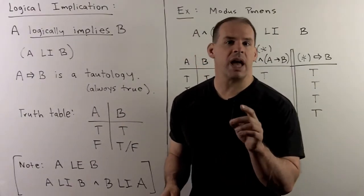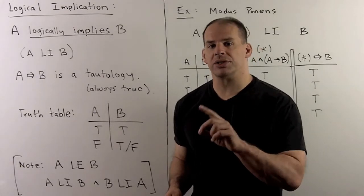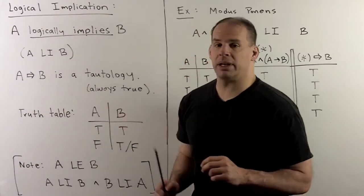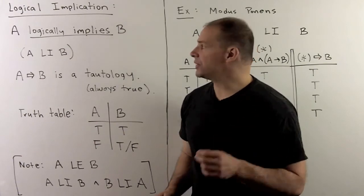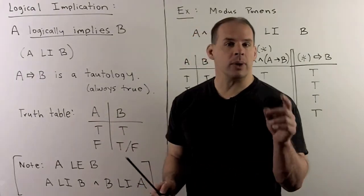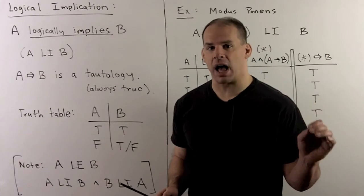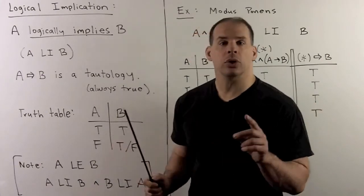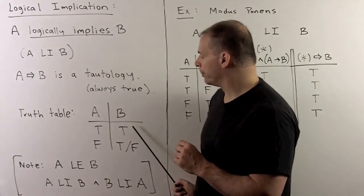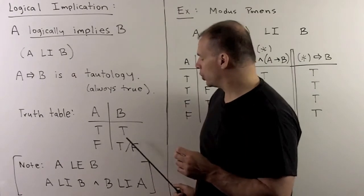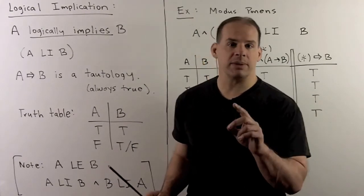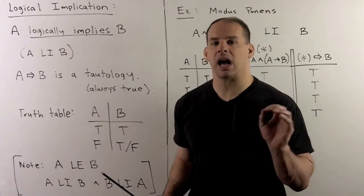Related to logical equivalence, we have logical implication. Here we don't insist the truth tables be equal — we just want that whenever the first statement is true, the second statement is also true. Then I say A logically implies B. Another way to say that is A implies B is a tautology. In the truth table, whenever A is true, B must be true; when A is false, B can be either true or false. If A and B are logically equivalent, that's the same as A logically implying B and B logically implying A.